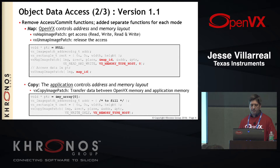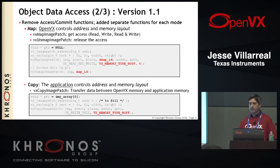When you look at the copy function, there was really no need to have to access and then commit when you were just doing a copy. So we narrowed this down basically to a single function. You just specify what direction you're copying in, if it's read only or write only, and that's how you can copy from the application to OpenVX or vice versa.